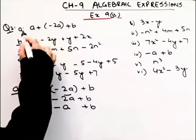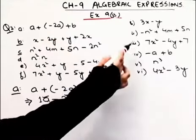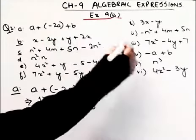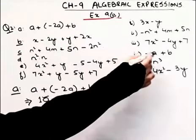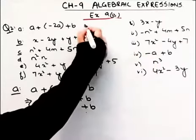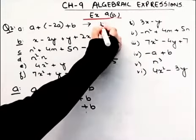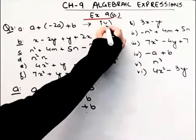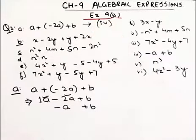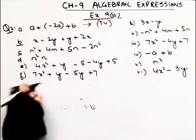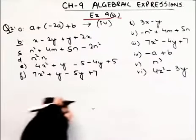So the answer is minus A plus B, that means the answer for part A is the fourth one — minus A plus B.